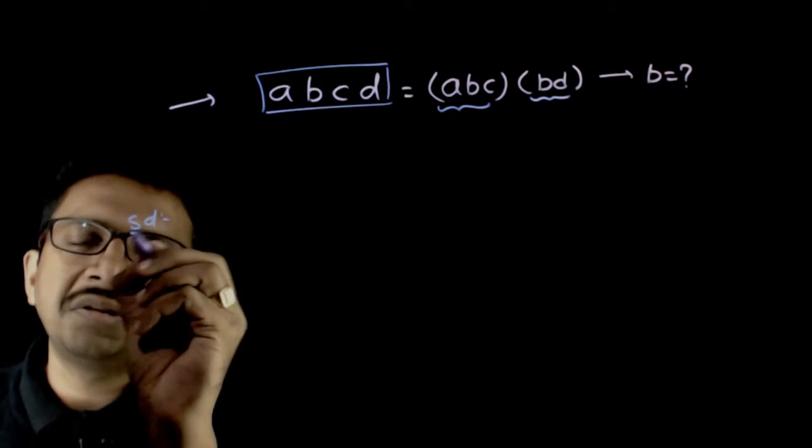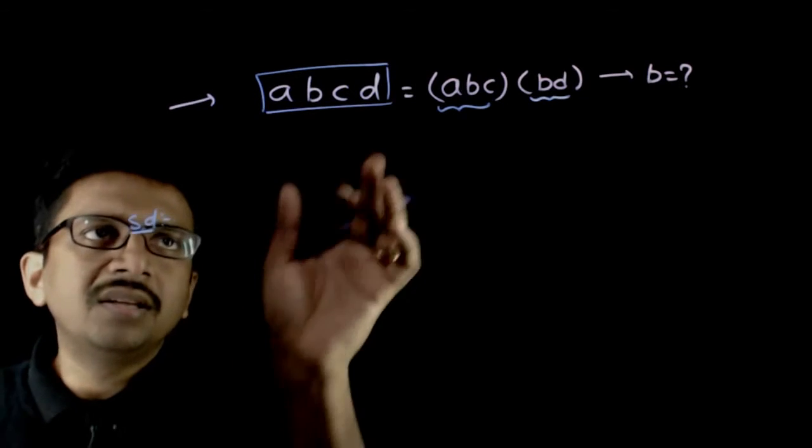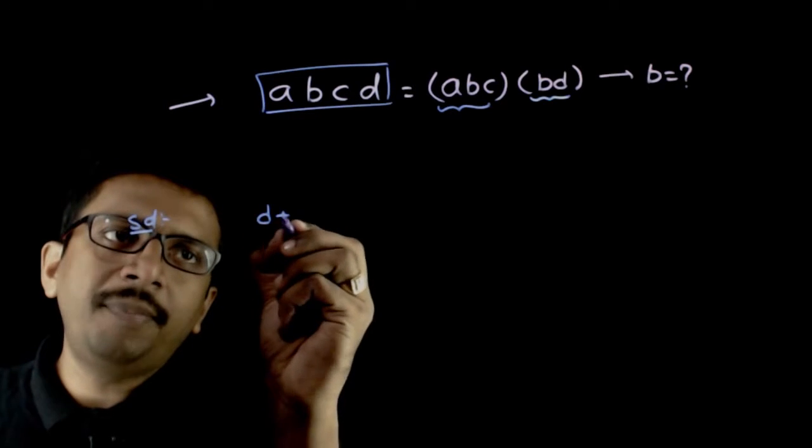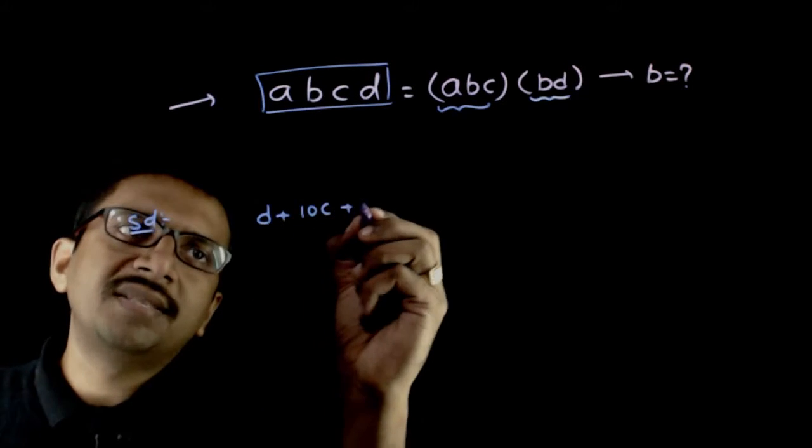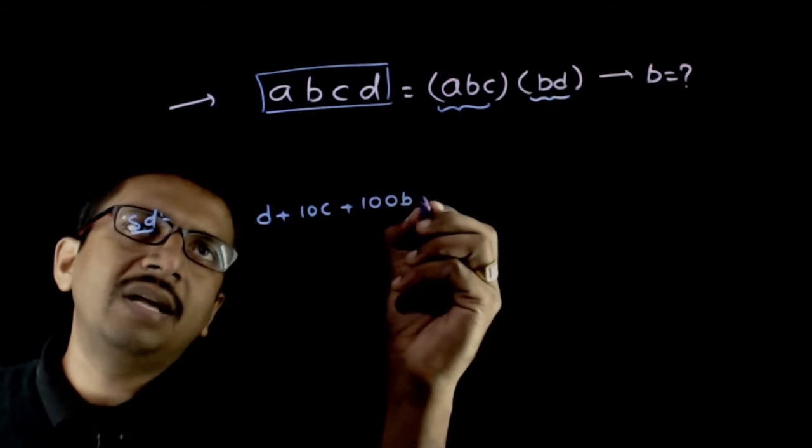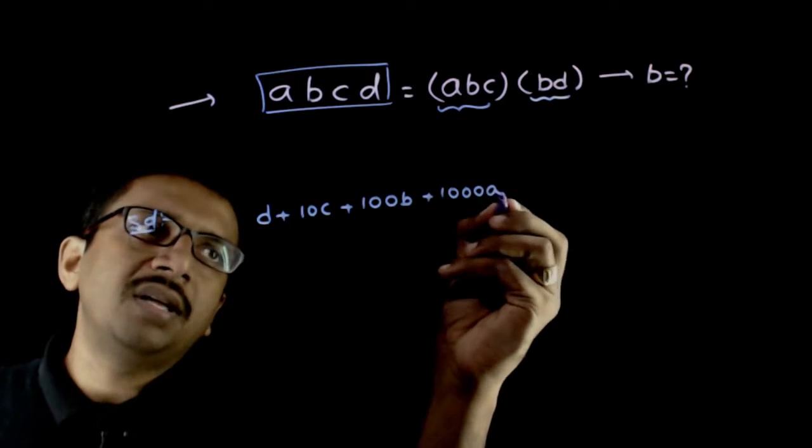Again this is a question based on the number theory. ABCD can be written as D plus 10C plus 100B plus 1000A.